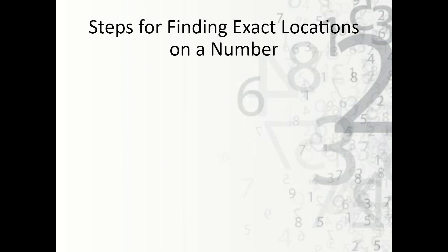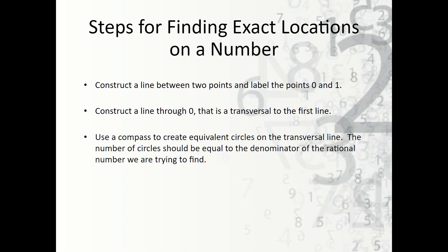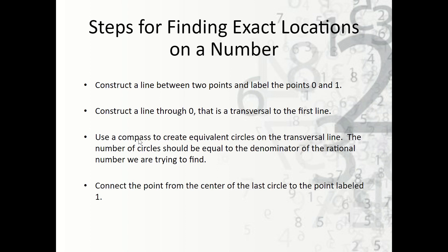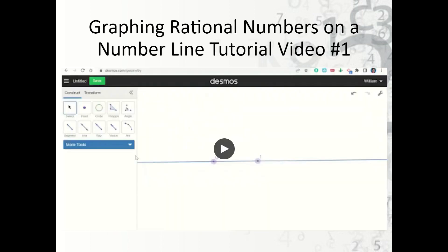Here are the steps for finding the exact locations on a number line. First, construct a line between two points and label them 0 and 1. Then construct a line through 0 that is a transversal to the first line, passing through 0 and working upward or downward. Then use a compass to create equivalent circles on the transversal line — the number of circles should equal the denominator of the rational number we're trying to find. Then connect the point from the center of the last circle to the point labeled 1, and copy that angle to the center of the circle matching the numerator. There's a video here showing how to construct a rational number on the number line.